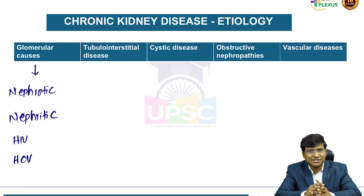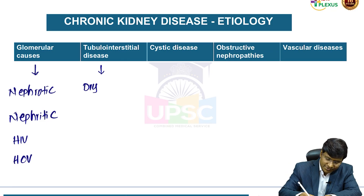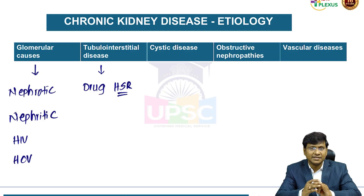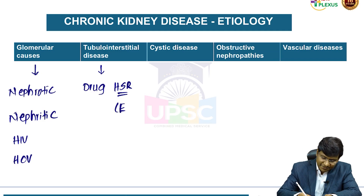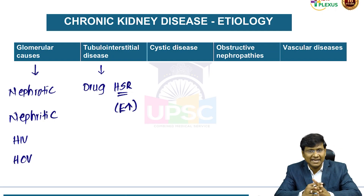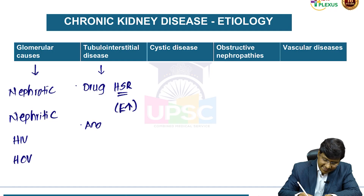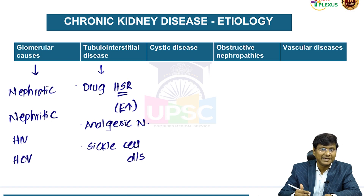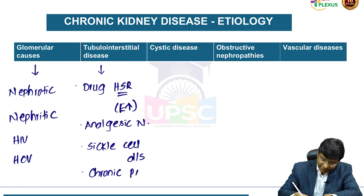Tubular interstitial diseases causing CKD are mainly drug hypersensitivity reactions — identified by elevated eosinophil levels in the blood picture — and analgesic nephropathy, sickle cell disease, and reflux or chronic pyelonephritis. Cystic diseases include polycystic kidney disease and medullary cystic disease. Obstructive nephropathies include benign prostatic hyperplasia, which initially causes post-renal acute kidney injury but can progress to chronic renal failure, and renal calculi or nephrolithiasis.